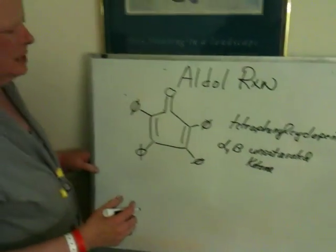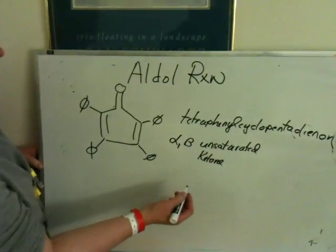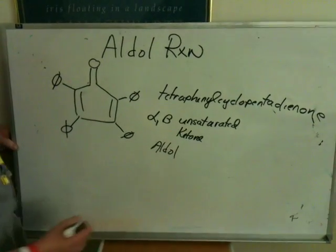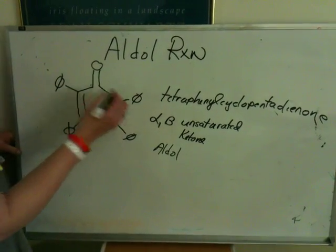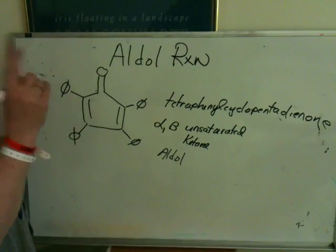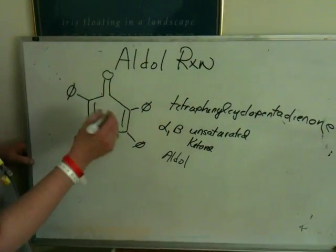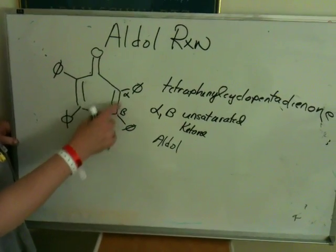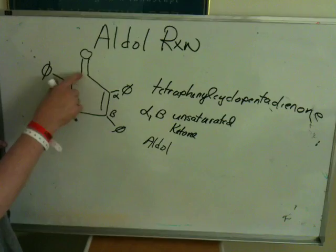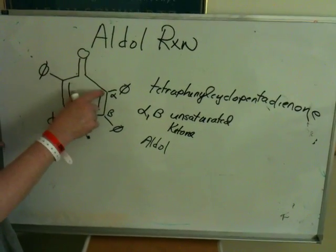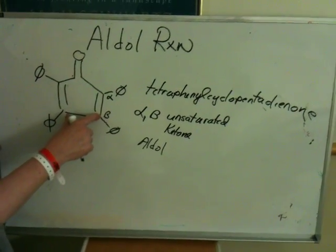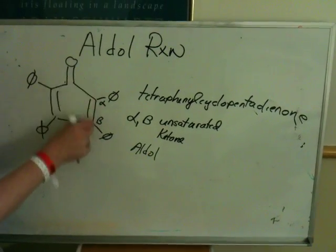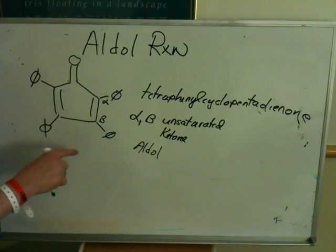Interestingly enough, when you have this kind of structure, this is called an alpha-beta unsaturated ketone. The position next to the carbonyl is called the alpha position; this is called the beta position. So it's an alpha-beta unsaturated double bond ketone, but notice it's doubly so.